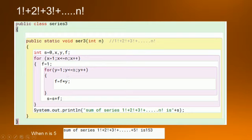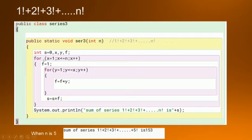Now y is 1, y is less than equal to x which is 2, so y plus plus. It writes f into y: 1 into 1 gives 1, then y increments to 2. F is equal to f into y: initial f is 1, so 1 into 2 becomes 2. Y increments to 3, condition not fulfilled, exits inner loop. S is equal to s plus f. Initial s was 1, so 1 plus 2 makes it 3. Then x increments to 3.